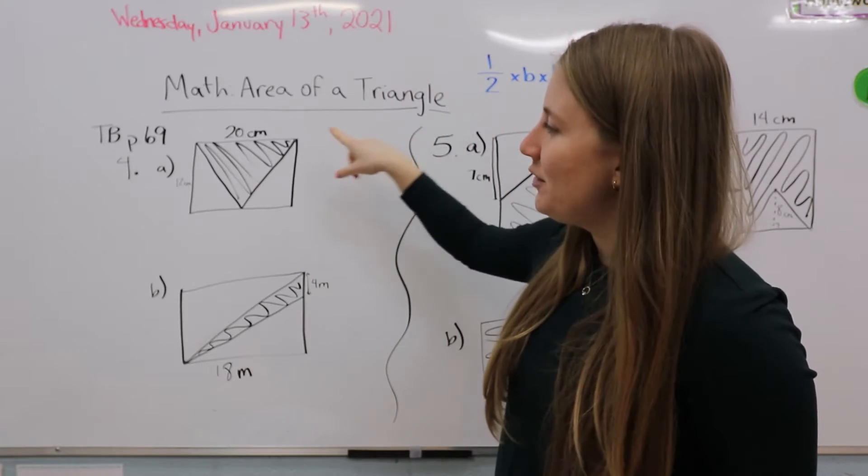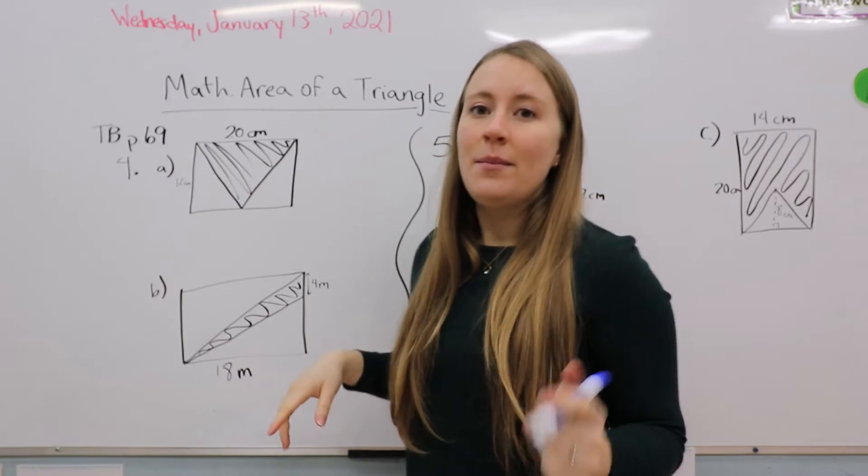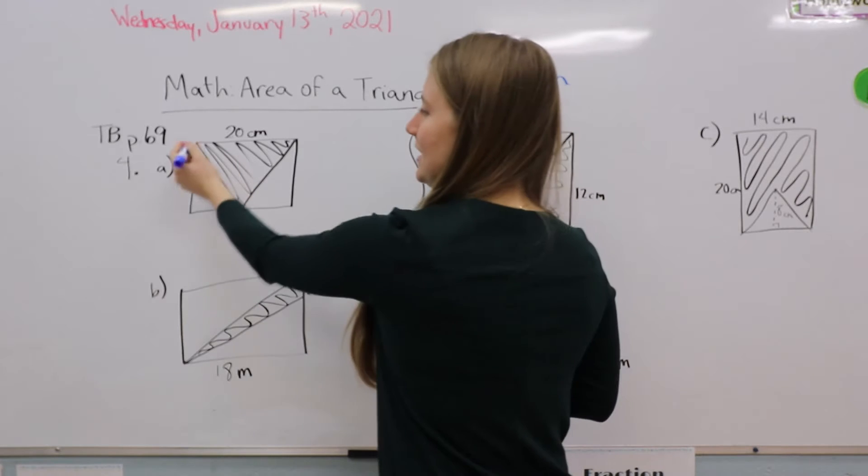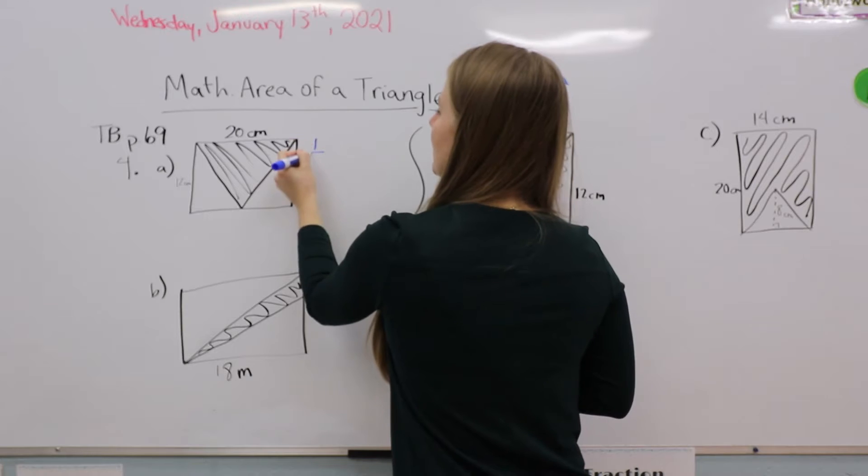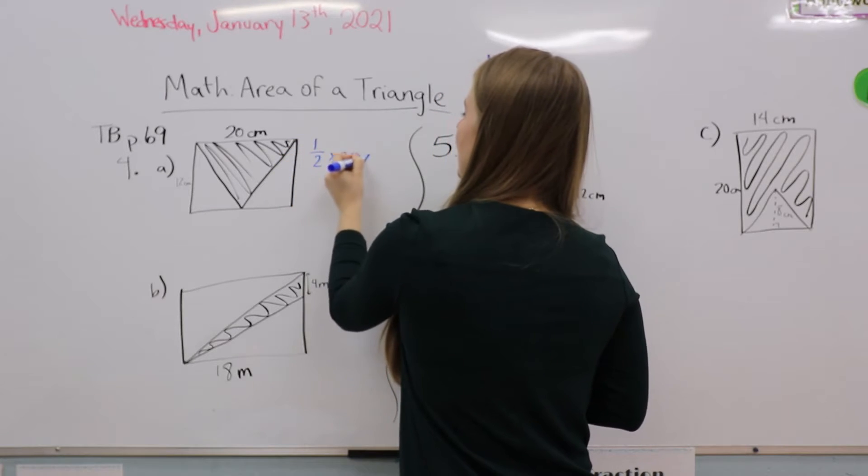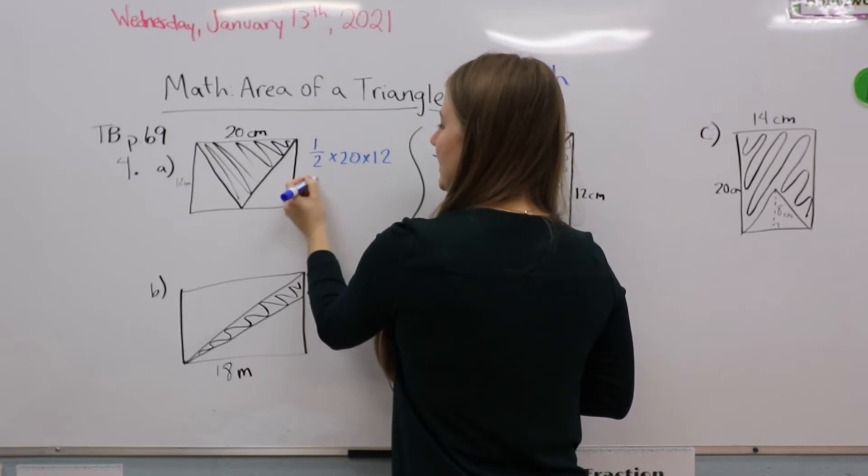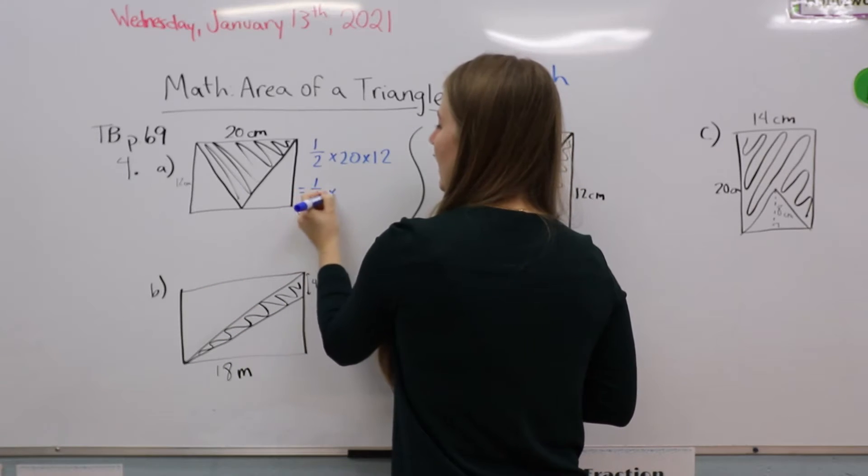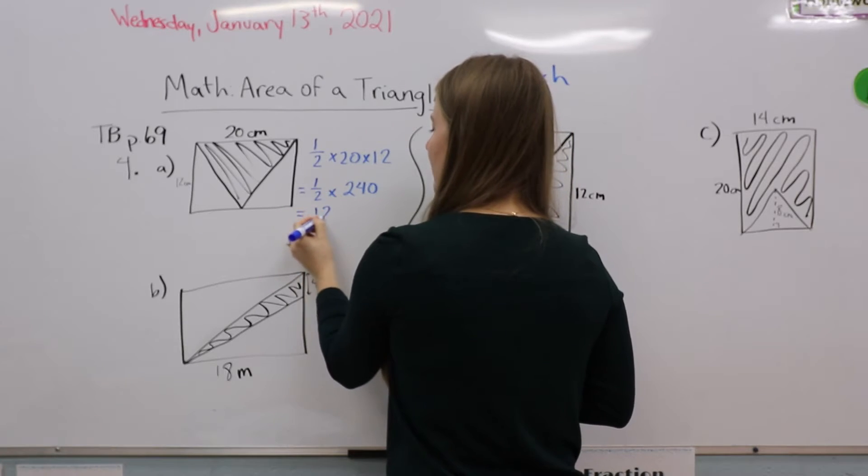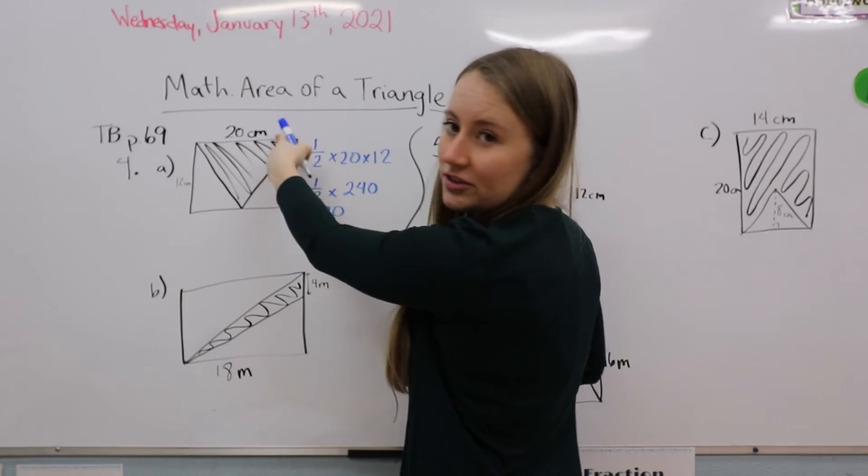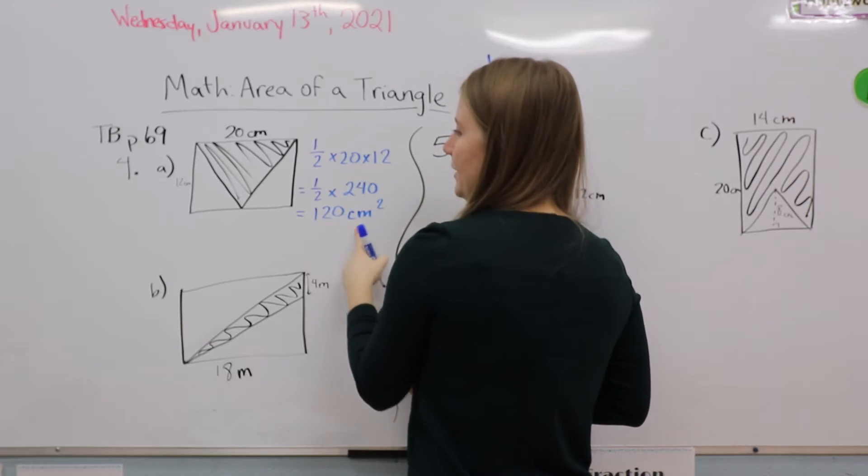We can see that we've been given two measurements: 20 centimeters and the side of the rectangle is 12 centimeters. But you can see that this is actually the height of the triangle, the 12 centimeters. So that means we're going to do half times 20 times 12, which is half times 240, which is 120. Our unit is centimeters, so it's 120 centimeters squared.